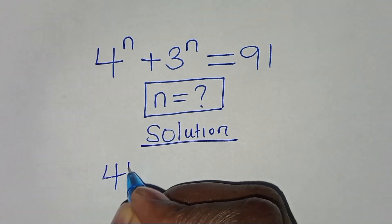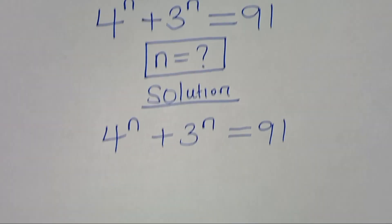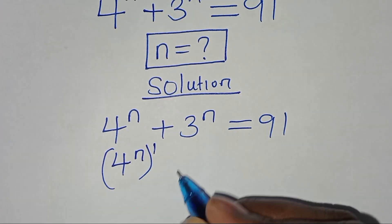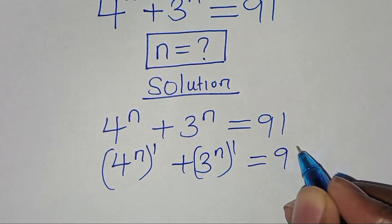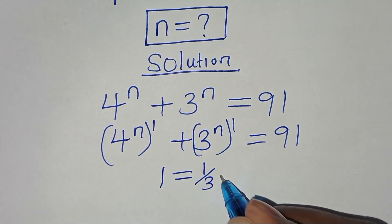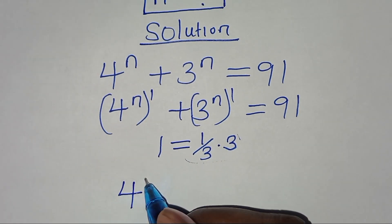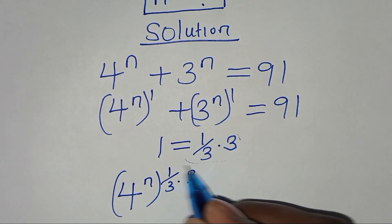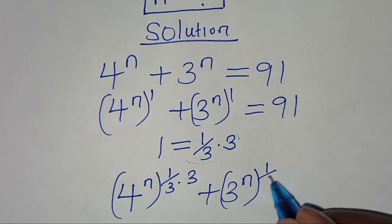We have 4 to the power n plus 3 to the power n equals 91. We can express 4 to the power n as 4 to the power n raised to the power 1, then plus 3 to the power n raised to the power 1. From here we can express 1 as one-third times 3. Substituting this, we have 4 to the power n raised to the power one-third times 3.